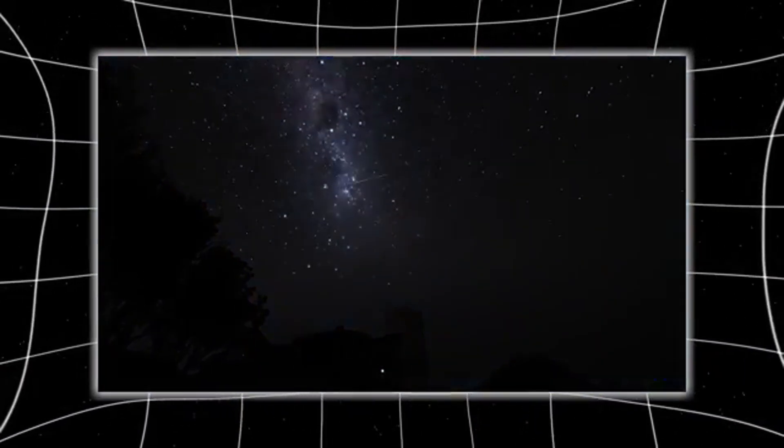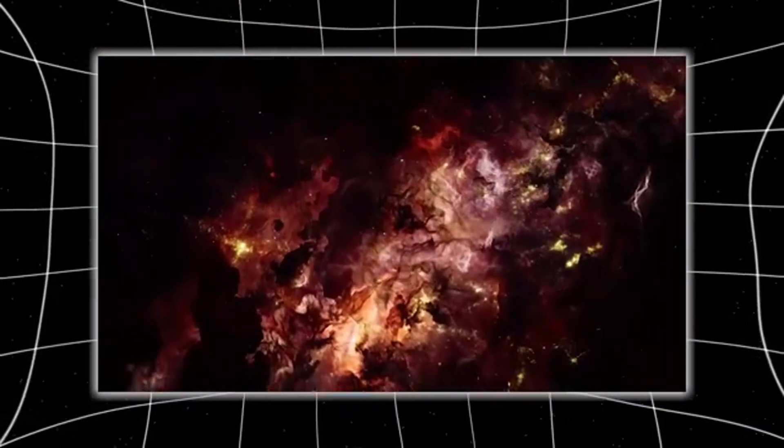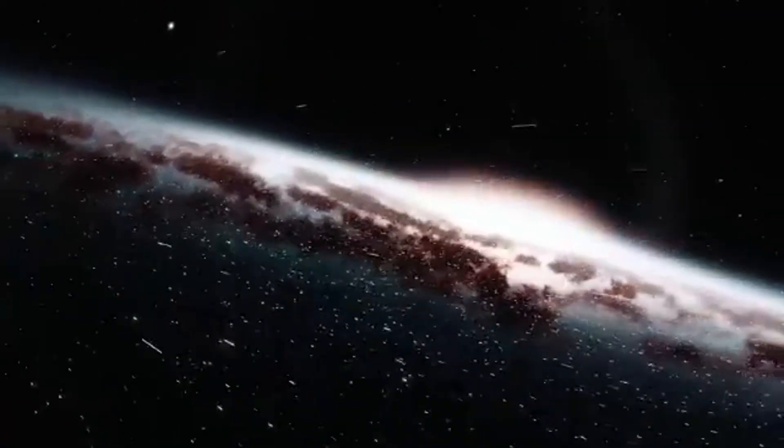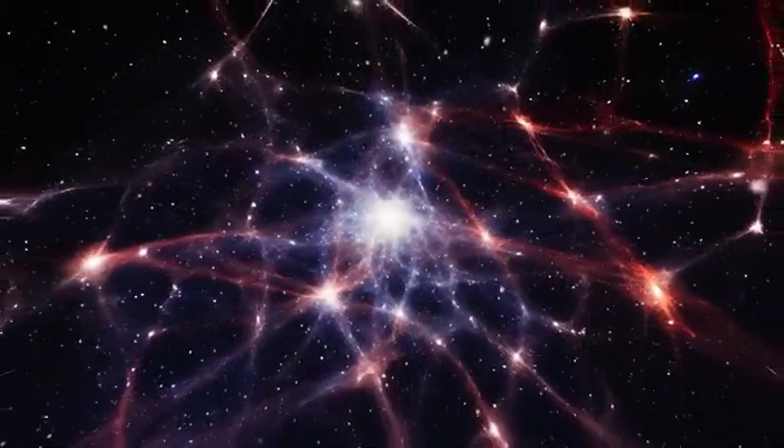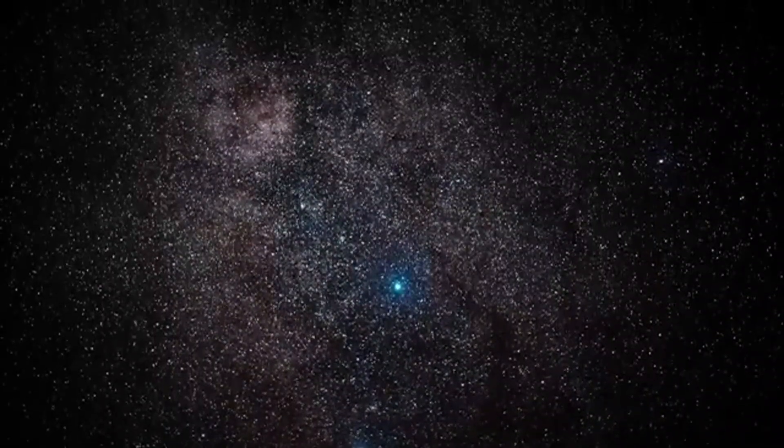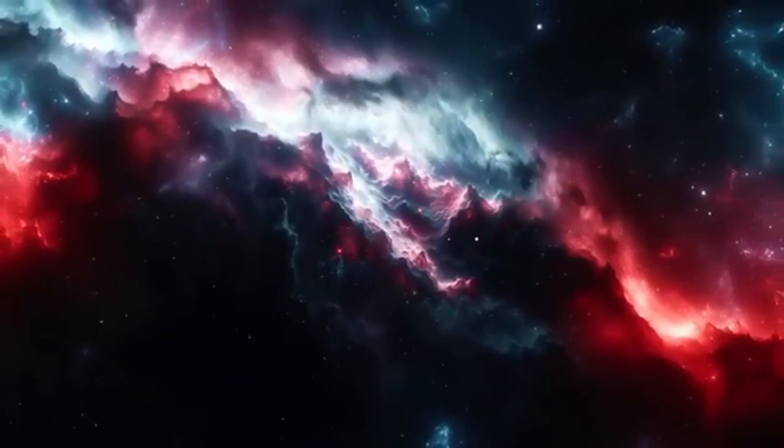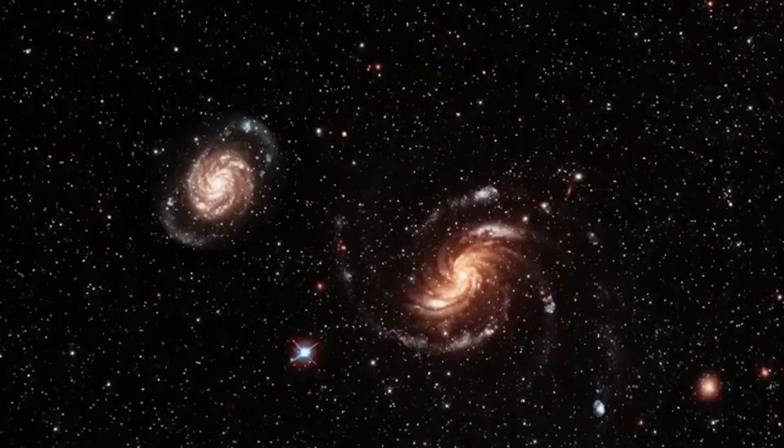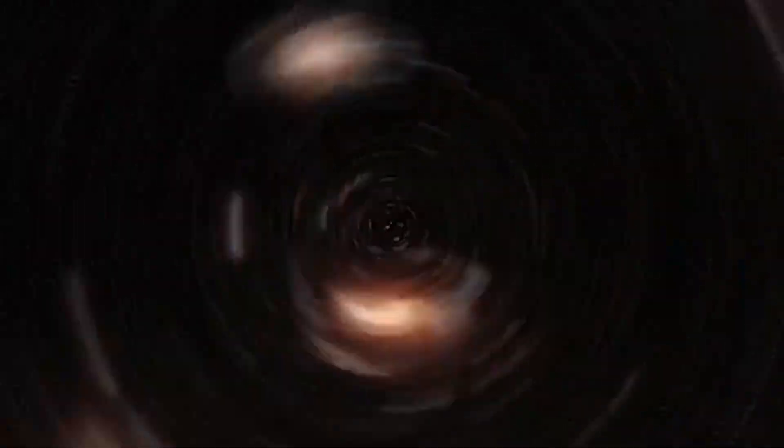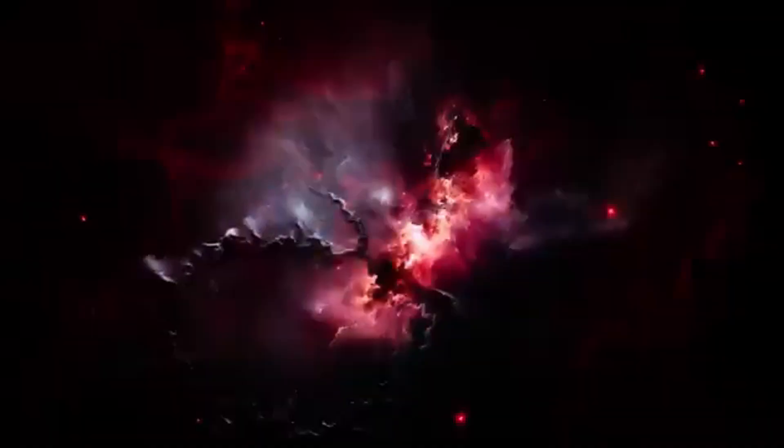But it wasn't just the hum. The spacecraft also measured density spikes, bursts of pressure like shockwaves left behind by ancient supernovae. It's as if Voyager was passing through layers of memory, zones in space shaped by stellar deaths that happened thousands, maybe millions of years ago. Interstellar space isn't an empty corridor. It's a swirling ocean of invisible currents and echoes. And Voyager, as our tiny sailboat, navigating blind through weather we never even knew existed.